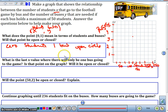So 0 students, 1 bus. If we were thinking about that, we'd have it 0 all the way up until we hit 50 students. 50 students can fit on that bus, so it's going to be a closed circle.